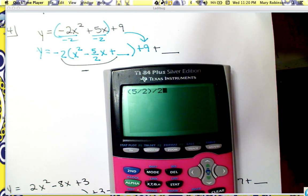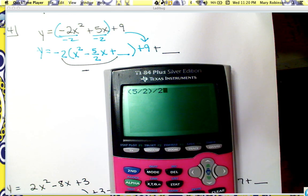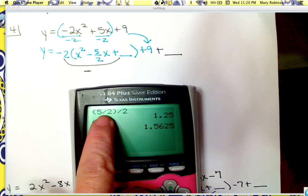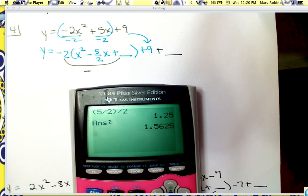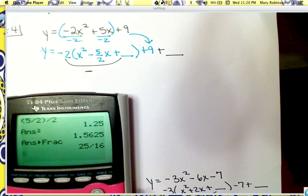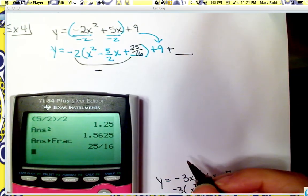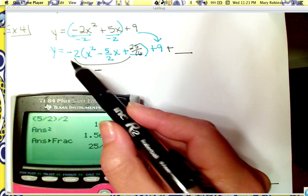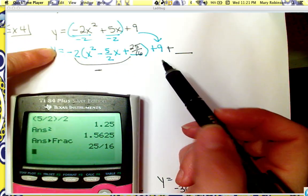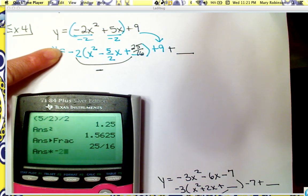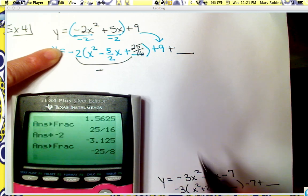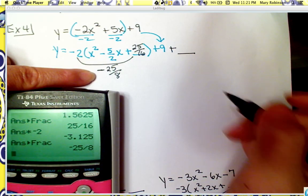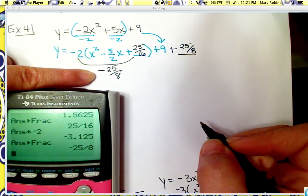Taking half of 5 halves — that is, 5 halves divided by 2 — and then squaring it gives a decimal, so we convert: the number in the blank is 25 sixteenths. But we don't just put 25 sixteenths at the end. We have to see what number was introduced: 25 sixteenths times negative 2 equals negative 25 eighths. So we add positive 25 eighths at the end to maintain equivalency.